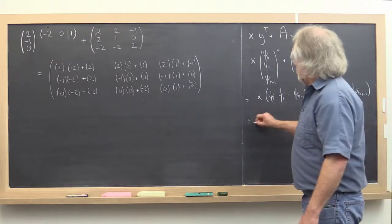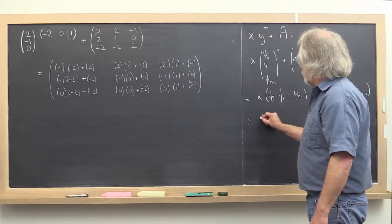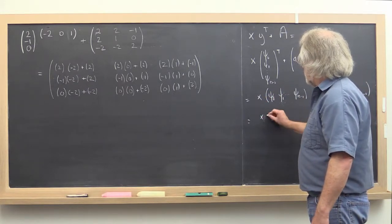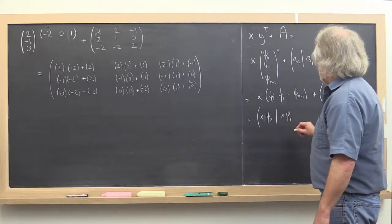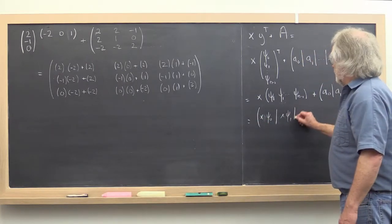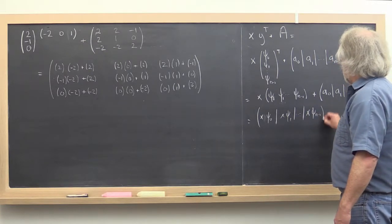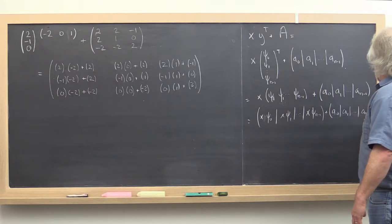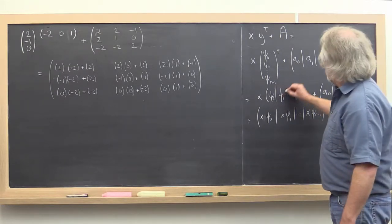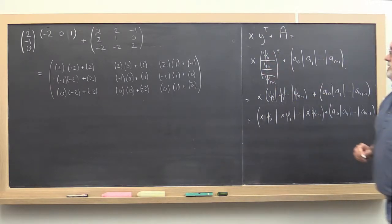If you now multiply this out, you recognize that this is x times psi 0 for the first column, x times psi 1 for the second column, and so forth through x times psi n minus 1 for the last column, added to the columns of A. To be clear, maybe we should put some lines here to make this clearer.